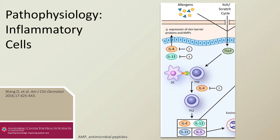External allergens, irritants, and bacteria activate what is known as thymic stromal lipoprotein, a type of cytokine, upon entrance into the epidermis. This is also called TSLP.